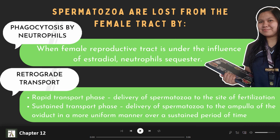Spermatozoa are lost from the female tract by two ways: phagocytosis by neutrophils and retrograde transport. When the female reproductive tract is under the influence of estradiol, neutrophils sequester in the mucosa of the tract, especially in the vagina and uterus. From an immunologic perspective, spermatozoa are foreign to the female, and as a result, neutrophils actively phagocytize spermatozoa. They do not discriminate whether the sperm is alive or dead; in fact, a single neutrophil is capable of engulfing several motile spermatozoa.